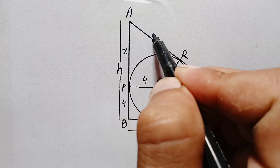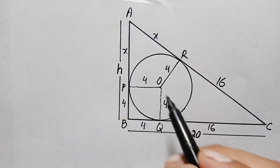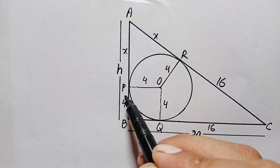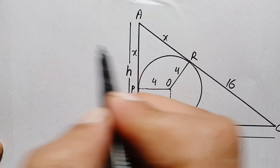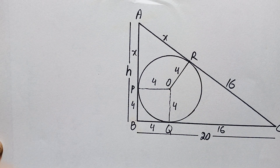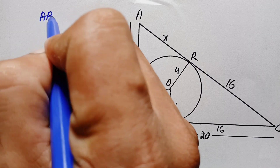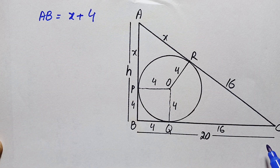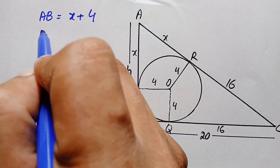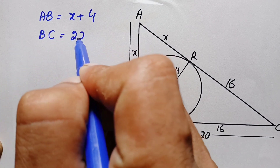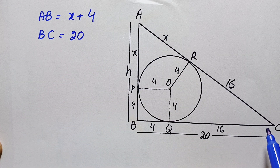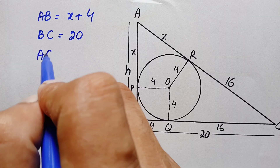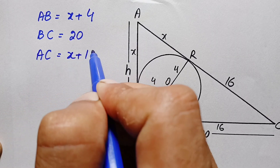So let us suppose this tangent is equal to x, so AR will also be x. Now looking at the figure, the length of AB is simply x plus 4. The length of BC is 20 units, and the length of AC is simply x plus 16.